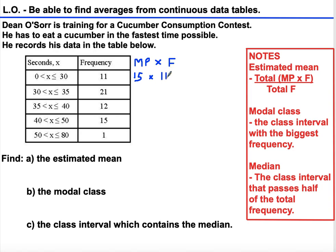15 times 11 is 165. We're going to do 32.5 times 21, and that is 682.5.